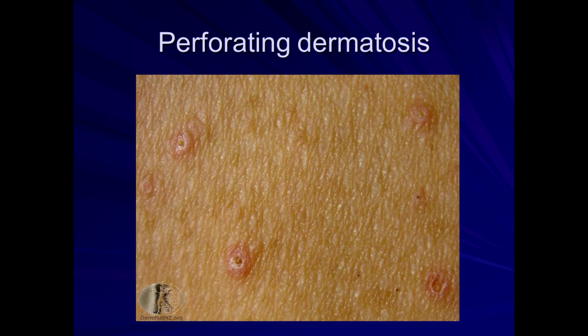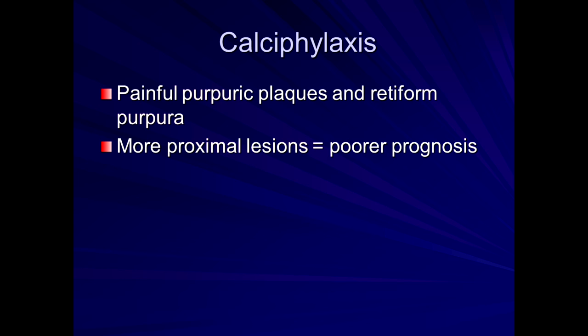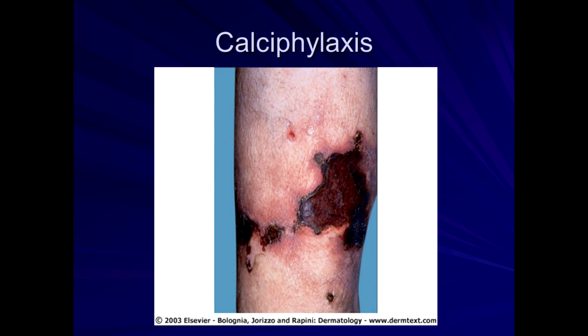Other less common but severe conditions in renal patients include calciflaxis — a condition of very painful purpuric, meaning purple-like hemorrhagic plaques, and retiform purpura. Retiform purpura means purpuric lesions that form a net-like configuration — almost like a net with a lacy appearance on the skin. They get hemorrhagic lesions, thought to be related to electrolyte imbalance in renal disease and alterations in parathyroid hormone levels. More proximal lesions generally have a worse prognosis.